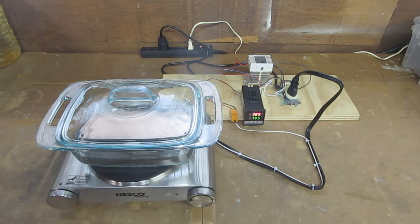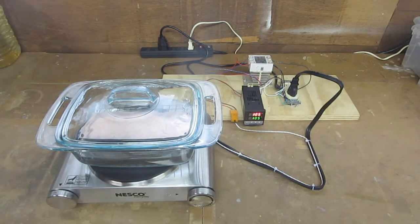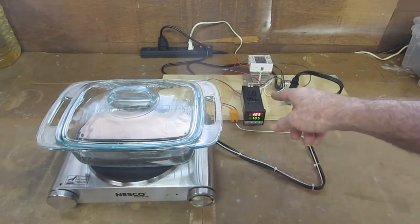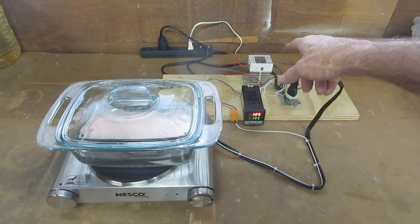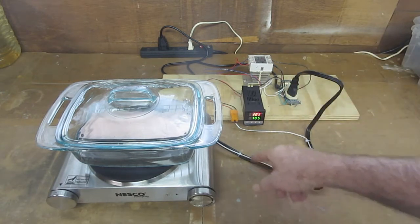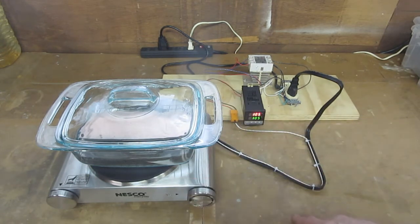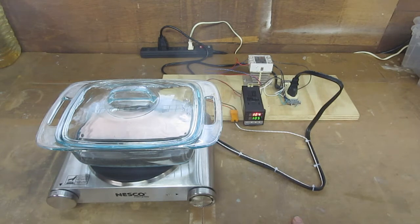So what this is: a hot plate and a casserole dish with a glass lid, and a temperature controller with solid-state relay. There's a thermocouple that's attached to the heating surface of the hot plate so it can tell when to turn the unit on and off for controlling the temperature.